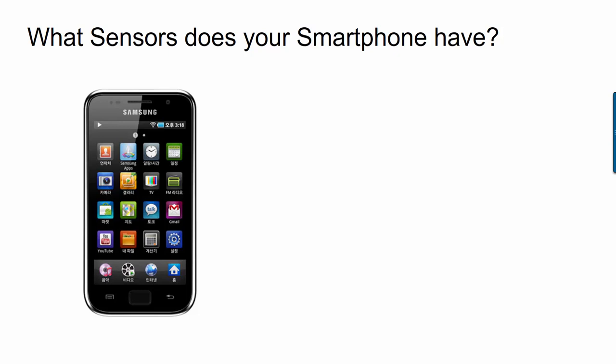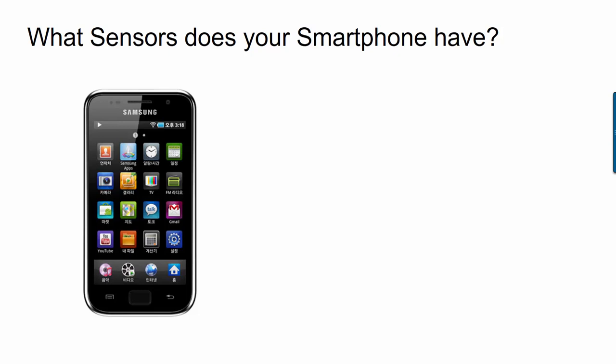Let's start with what sensors your smartphone has. Most smartphones have the same complement of sensor types, although there's some variability in types and a lot of variability in the details of each particular sensor. Some pretty typical ones are accelerometers, gyroscopes, magnetometers, and barometers.